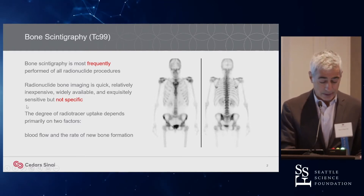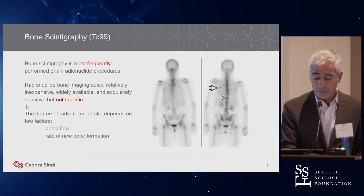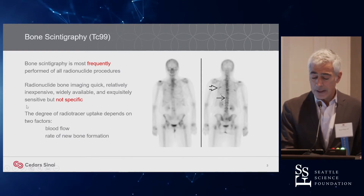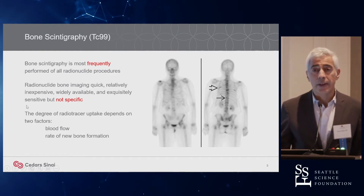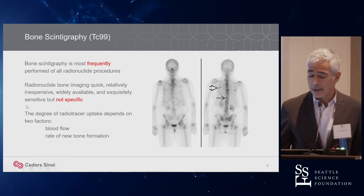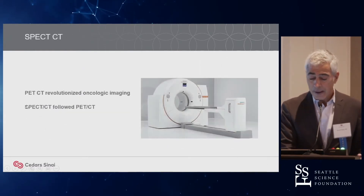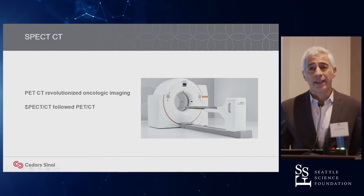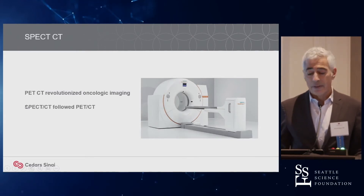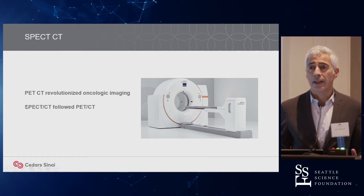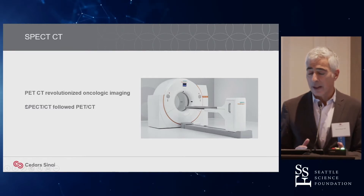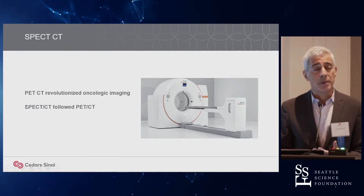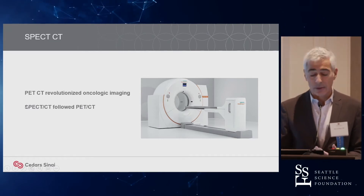We'll come back to that when we show examples. In a patient such as this one who has breast cancer, you have several areas of metastases in the skeleton and the spine, and those show up. What happened in the 1990s is PET-CT came aboard, and that was tremendously successful in merging PET-CT functional imaging with cross-sectional imaging. That still forms the backbone of cancer imaging today.